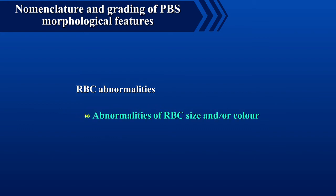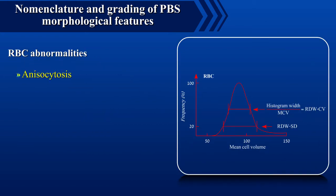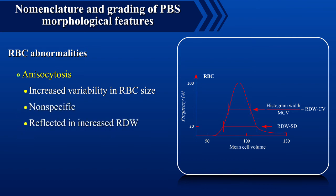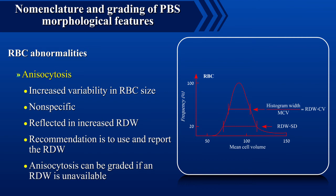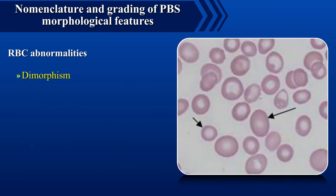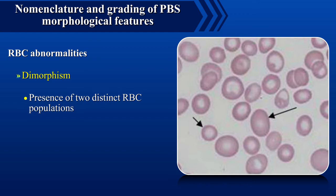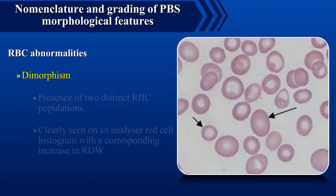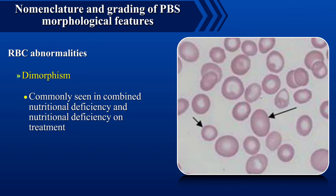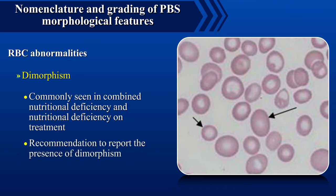Second, abnormalities of RBC size and/or color. Anisocytosis is an increased variability in RBC size; it is nonspecific and is reflected in increased RDW. The recommendation is to use and report the RDW, though anisocytosis can be graded if RDW is unavailable. Dimorphism is the presence of two distinct RBC populations, which may be clearly seen on an analyzer red cell histogram with a corresponding increase in RDW, commonly seen in combined nutritional deficiency and nutritional deficiency on treatment. The recommendation is to report the presence of dimorphism and describe the two populations.